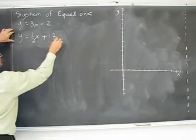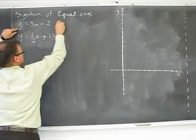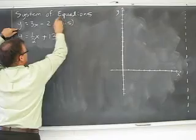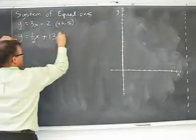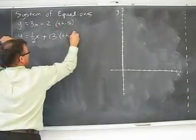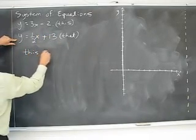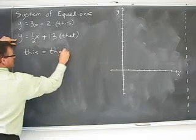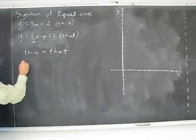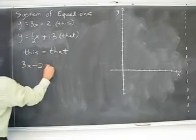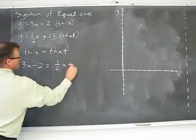In very technical language, if y equals this and y equals that, we can solve for where they cross if this equals that. In other words, 3x minus 2 equals 1 half x plus 13.